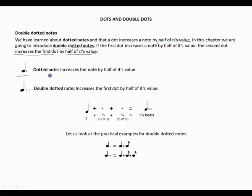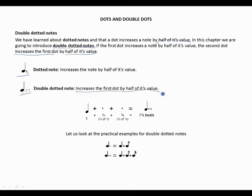This is a dotted crotchet — the dot increases the note by half of its value. This is a double dotted crotchet — we now have two dots. The first dot increases the note, and the second dot increases the first dot. So a double dotted note increases the original note by the first dot's value, then the second dot increases the first dot by half of its value.